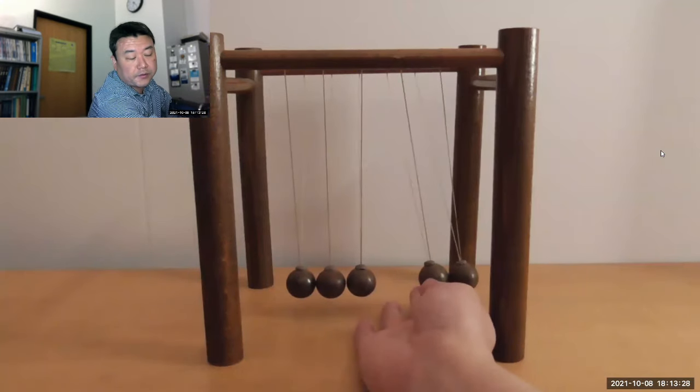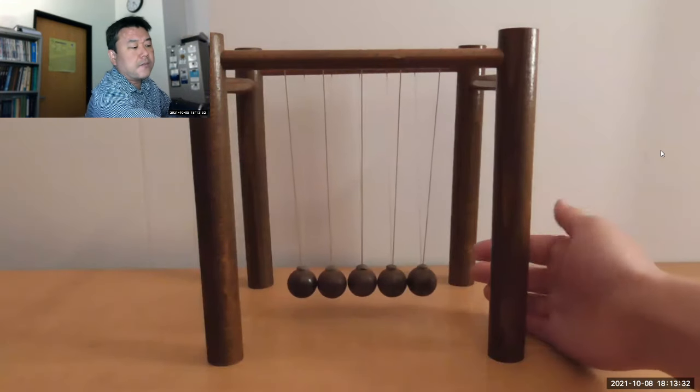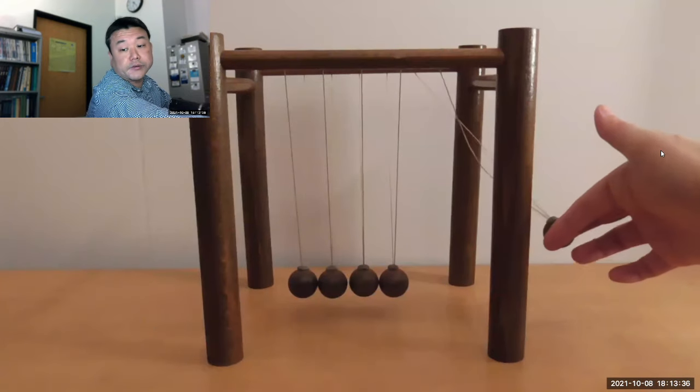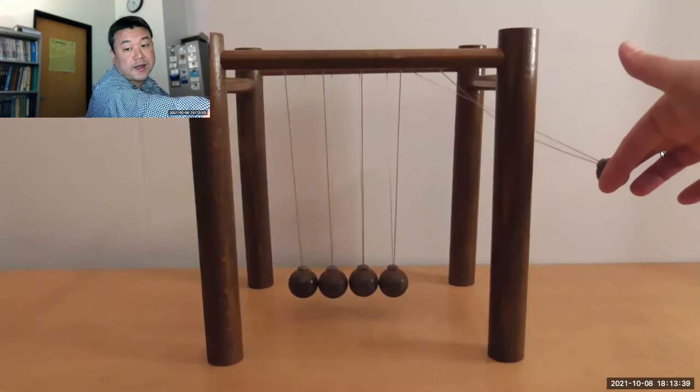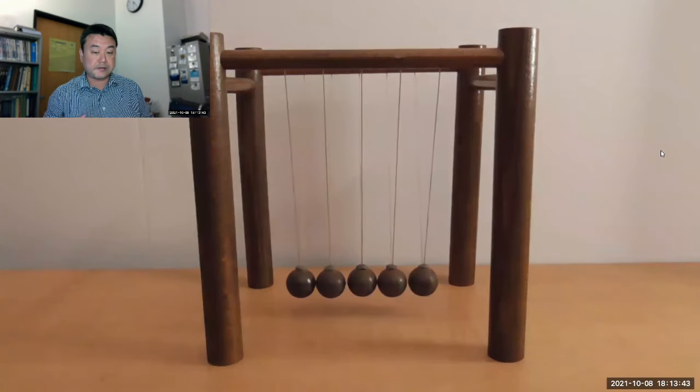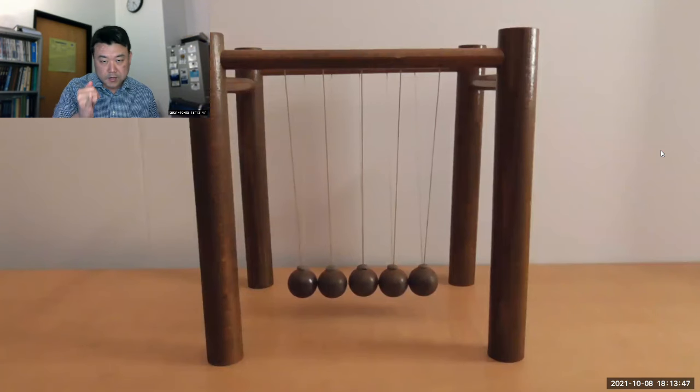But given that twice the energy, why does it have to be that it's two balls coming up with the same speed that they came in? Why couldn't it be that somehow all of the energy goes into one ball, and this one ball comes out? Like this one ball goes to this height like that?